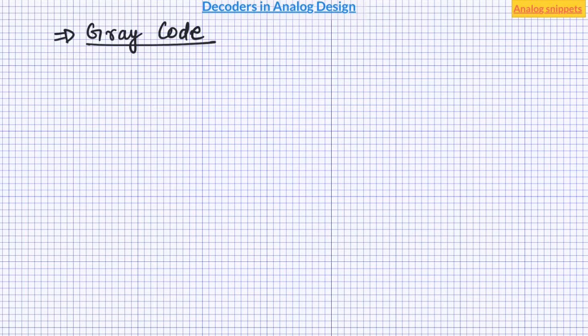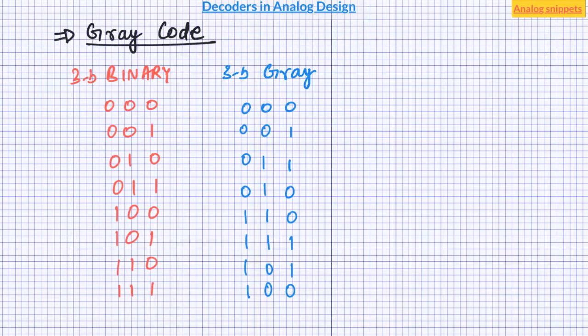In gray code the adjacent combinations differ only in one bit. Considering 3-bit gray code as an example, notice that any two adjacent combinations differ only in one bit. While in equivalent 3-bit binary consider these two combinations where all the bits are actually inverted. And since in successive transitions only one bit is changing at a time the probability of glitches becomes very small.